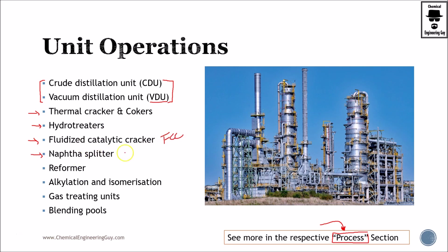The naphtha splitter sends naphtha into gasoline, light naphtha, gas, and naphtha that's going to be used in the steam cracking process. Then we have the reformer, or catalytic reformer, and alkylation and isomerization units.